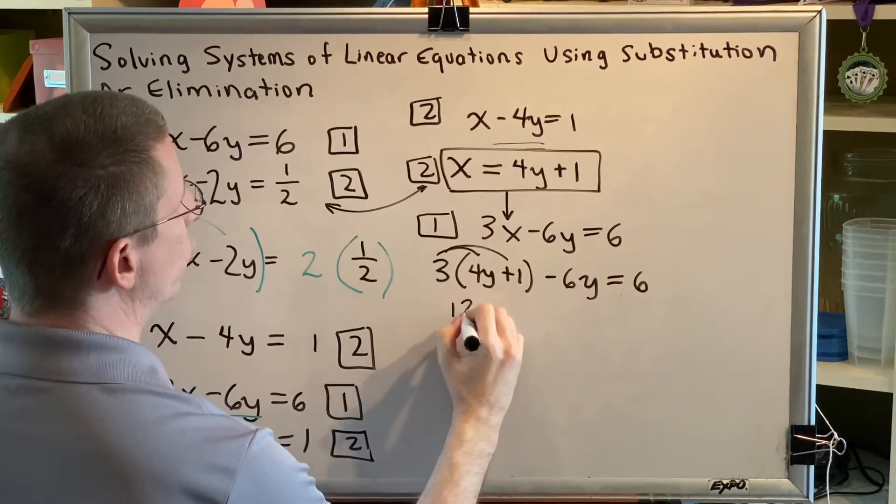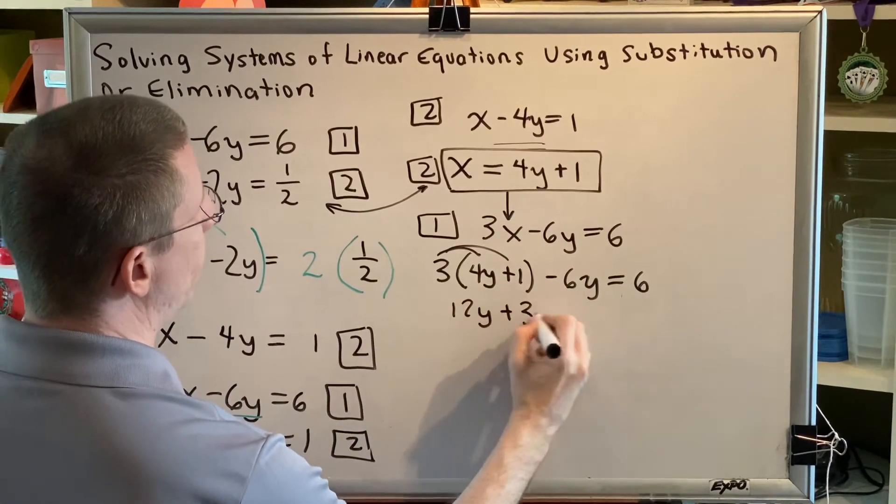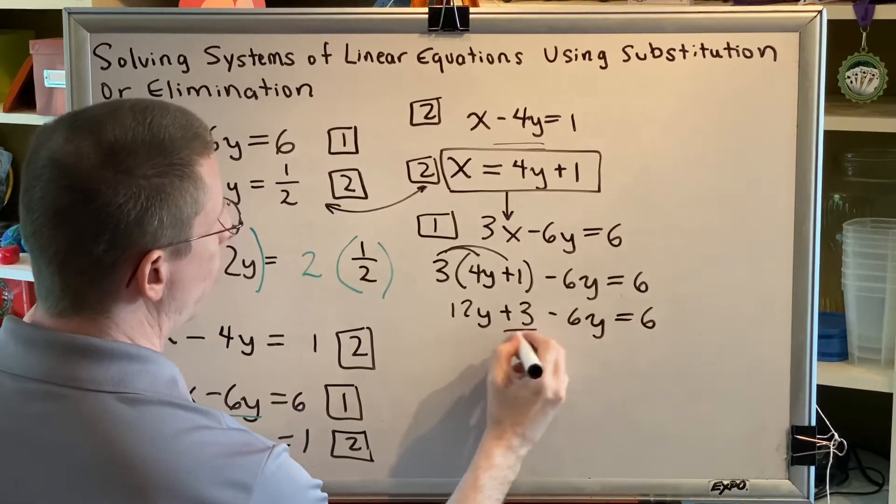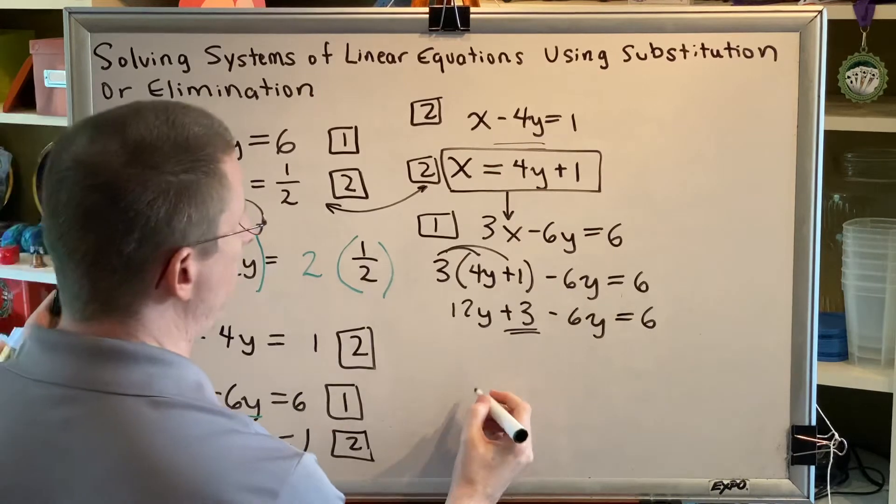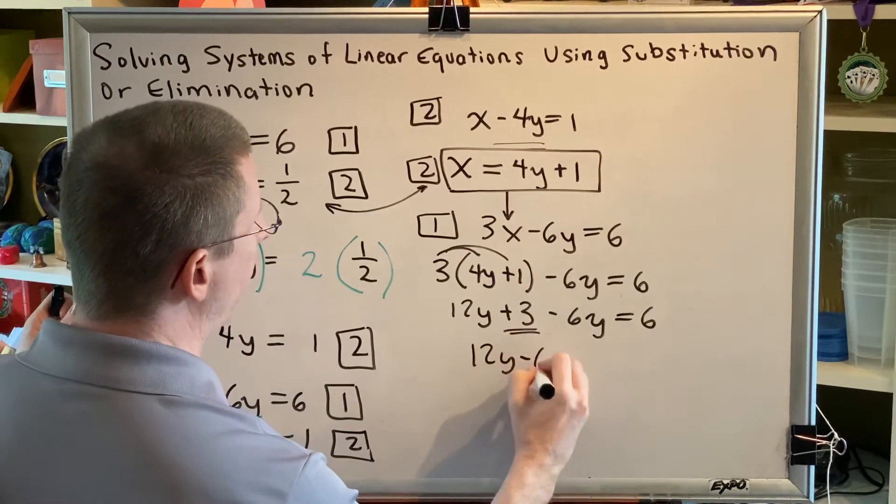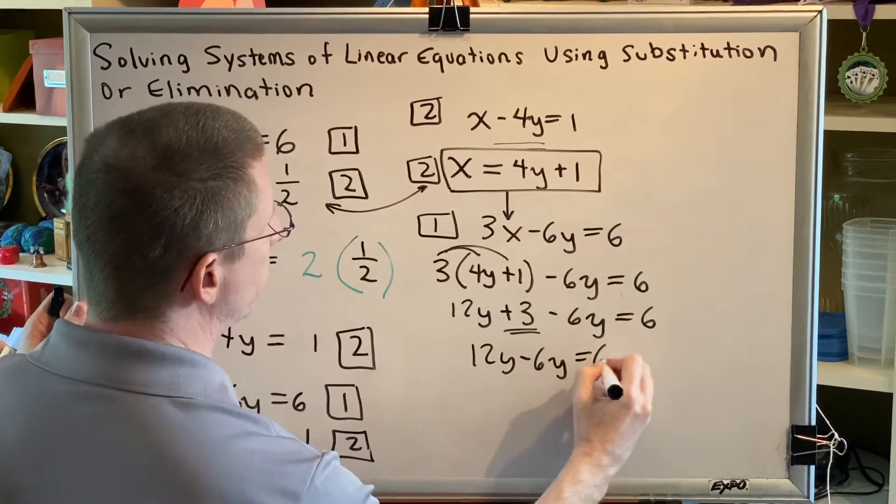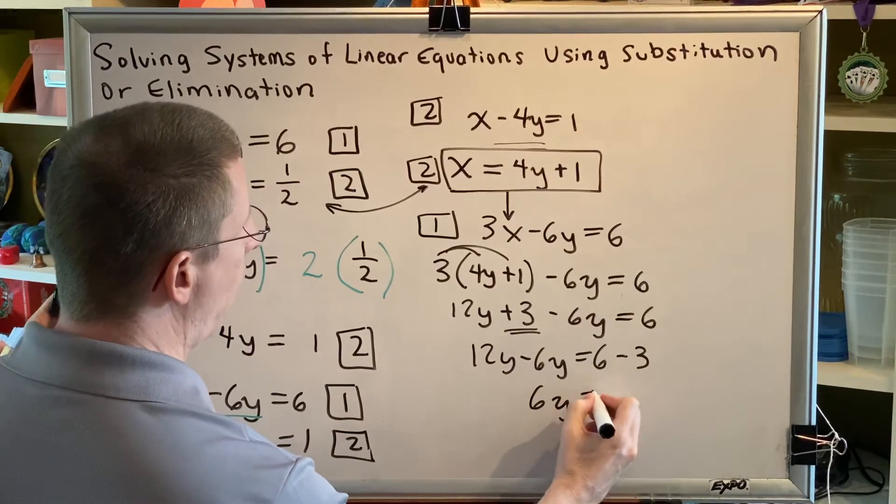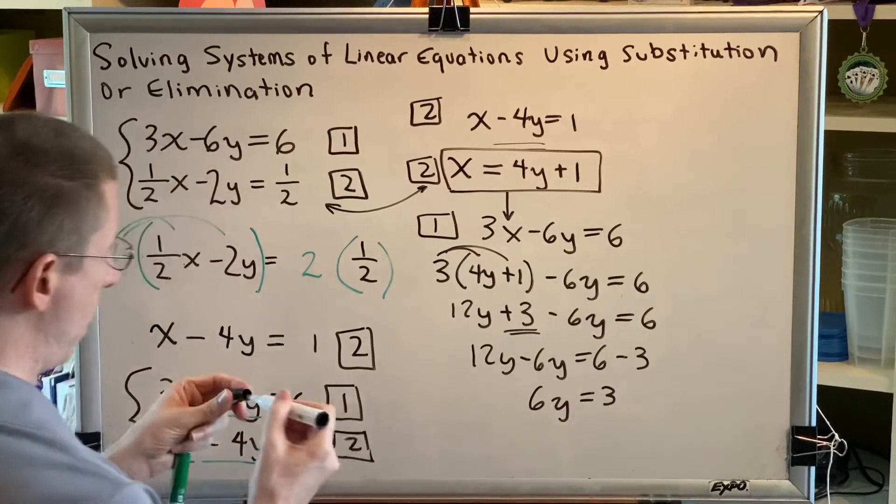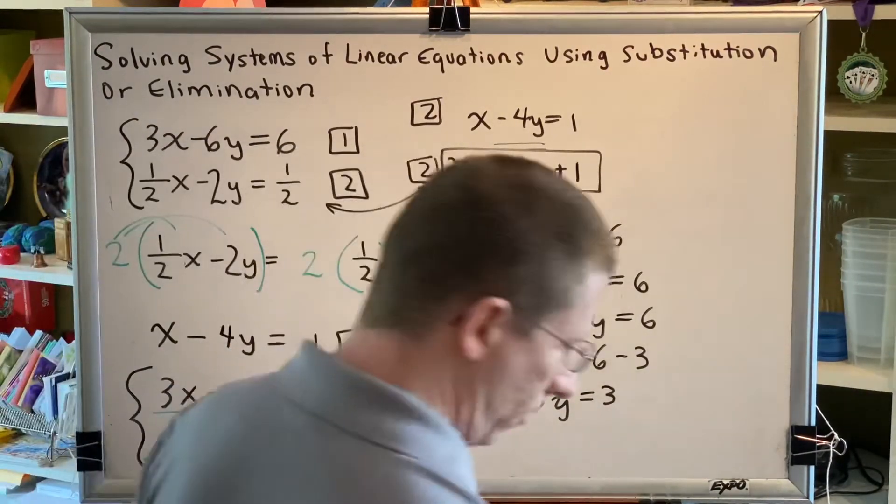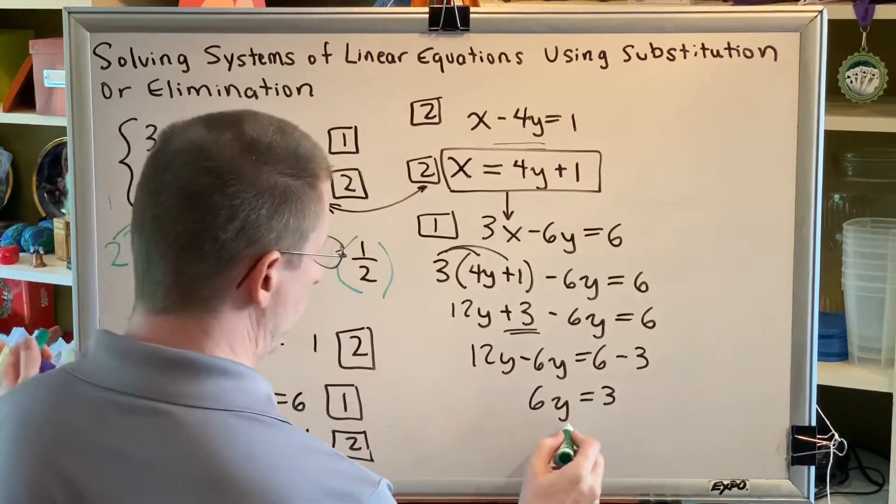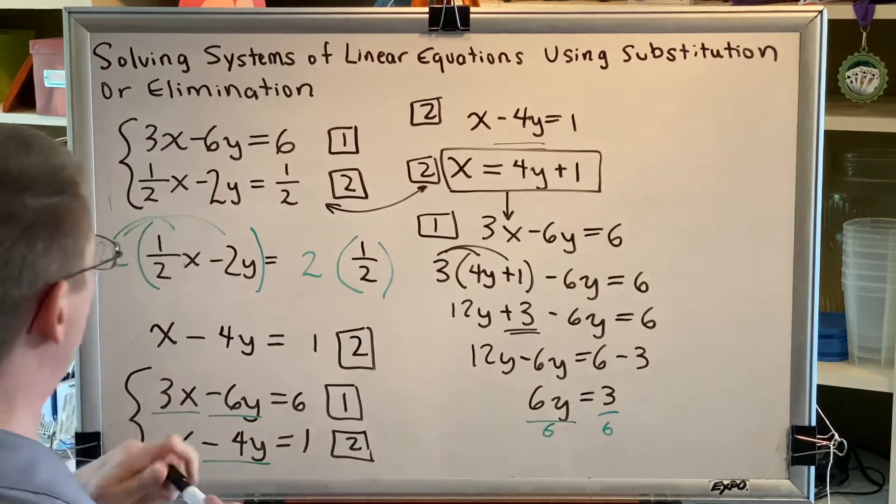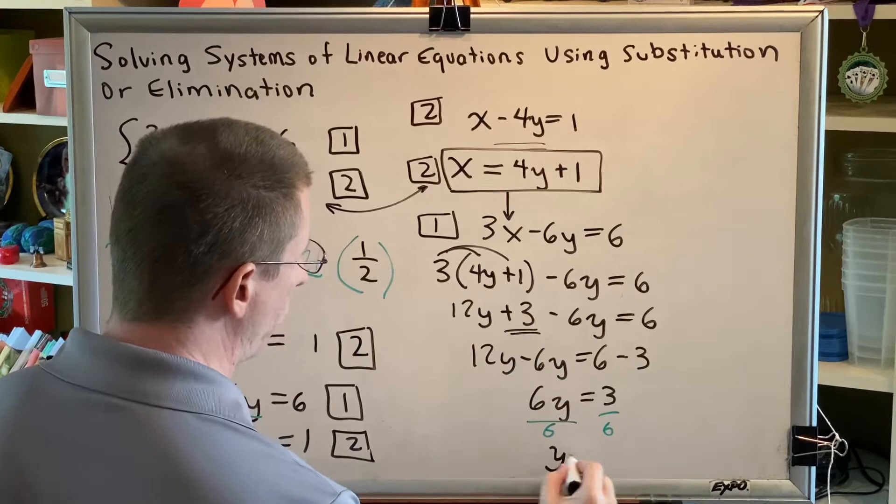Distributing, we get 12y plus 3 minus 6y equals 6. Moving the add 3 to the other side, we get 12y minus 6y equals 6 subtract 3. Combining like terms gives us 6y equals 3. And dividing both sides by 6 and reducing the fraction gives us the solution y equals 1 half.